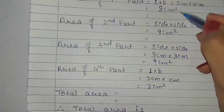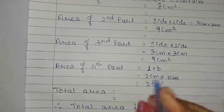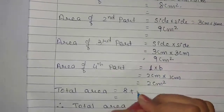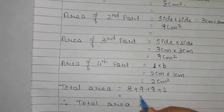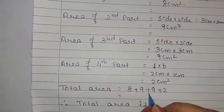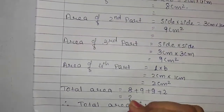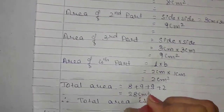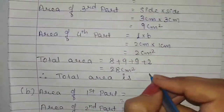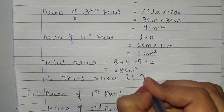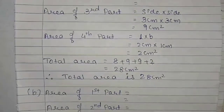Now let us take the total area: 8 plus 9 plus 9 plus 2. That gives us 18 plus 2 equals 20, and 20 plus 8 equals 28 cm square. Therefore, the total area is 28 cm square.